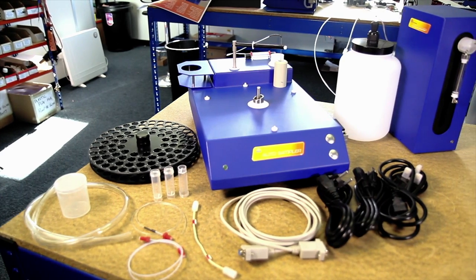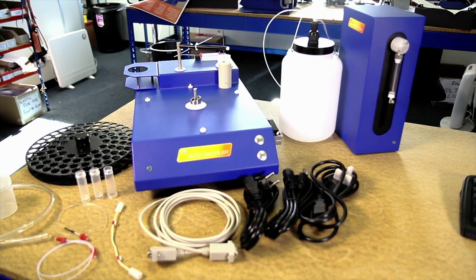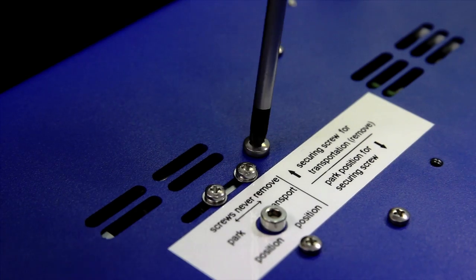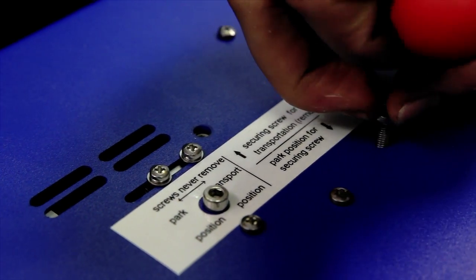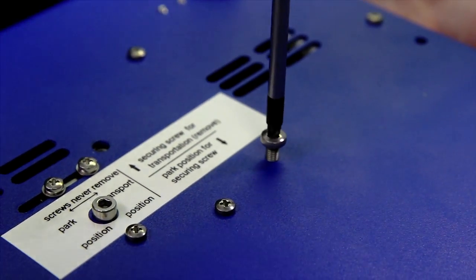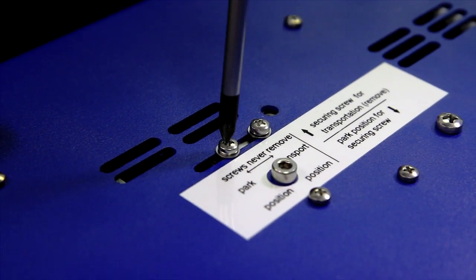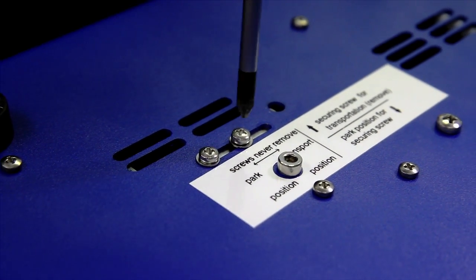The auto sampler and auto diluter have been designed to work together seamlessly and require very little time to set up. On the underside of the auto sampler, the transport securing screw needs to be moved from transportation to park position and screwed back in. Then simply loosen the never remove screws and slide them across to park position and retighten.